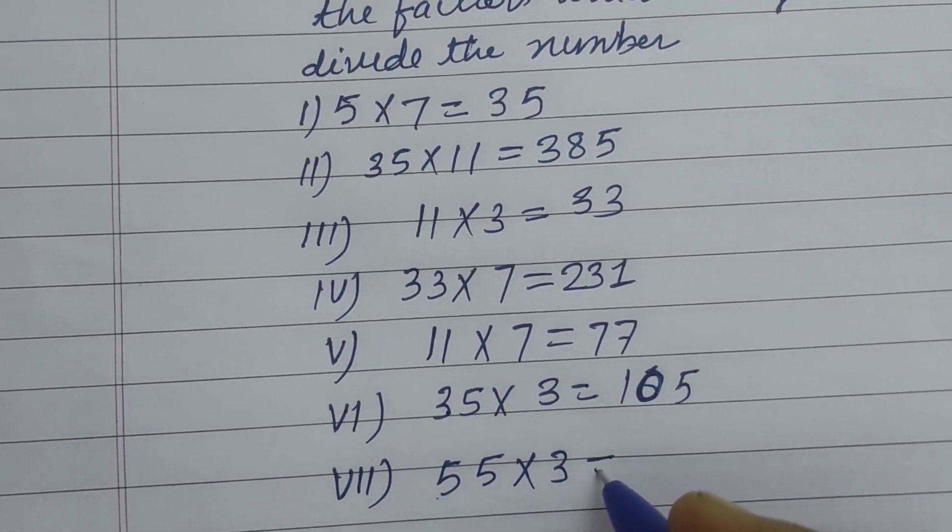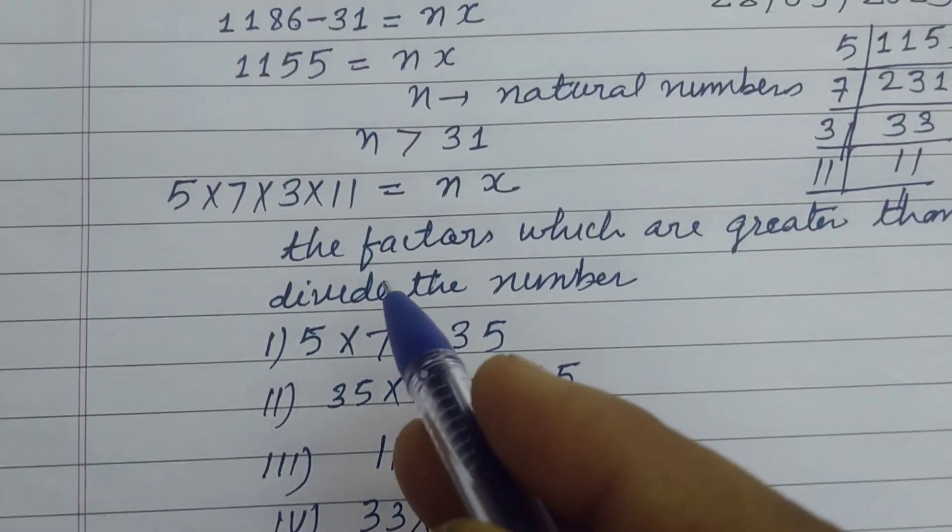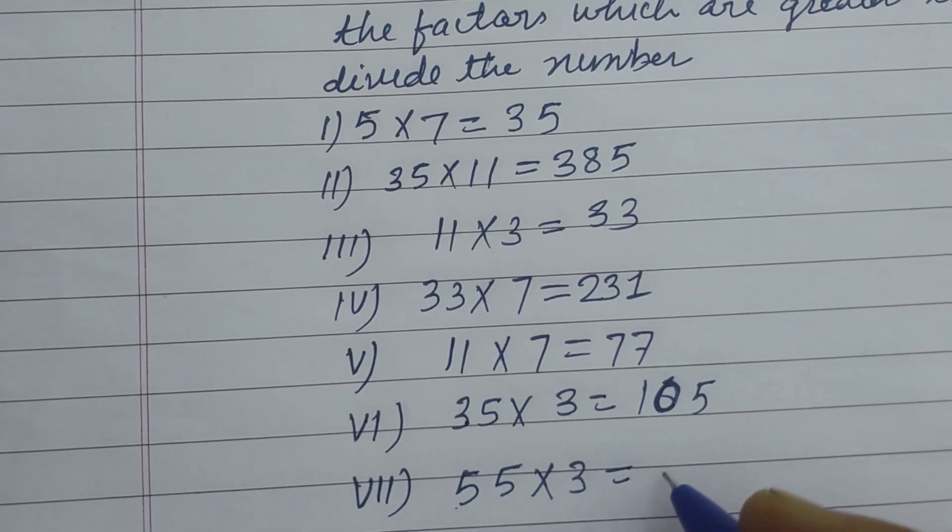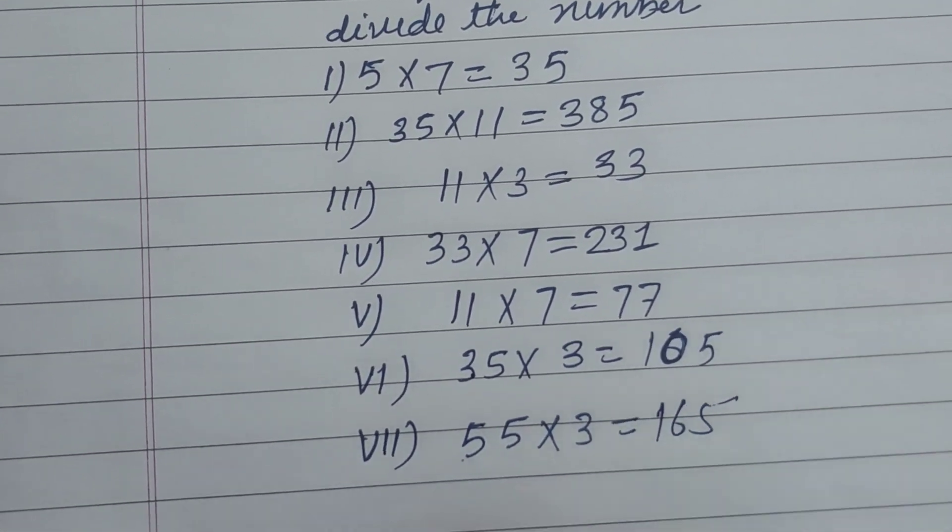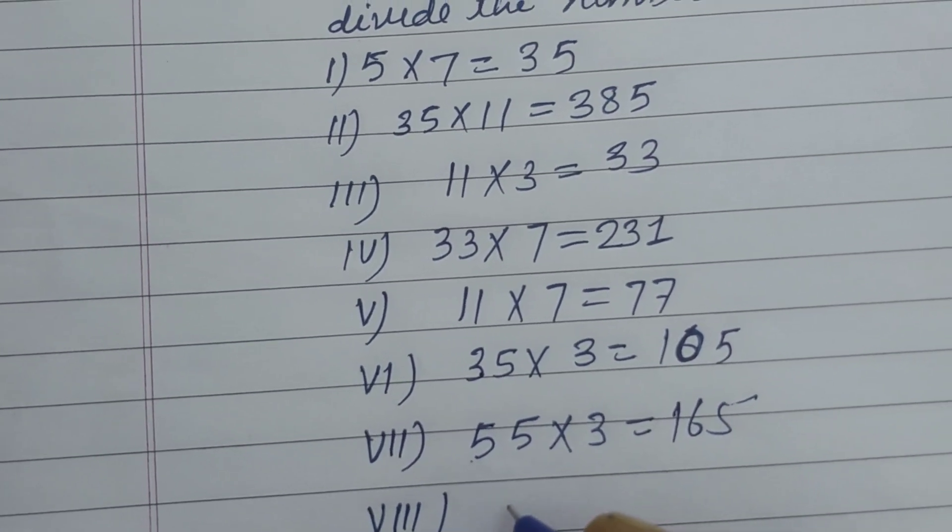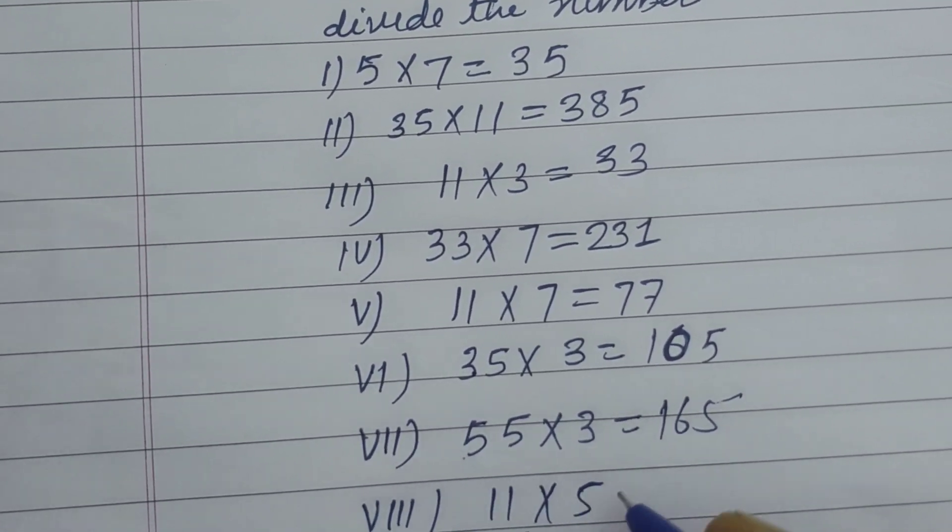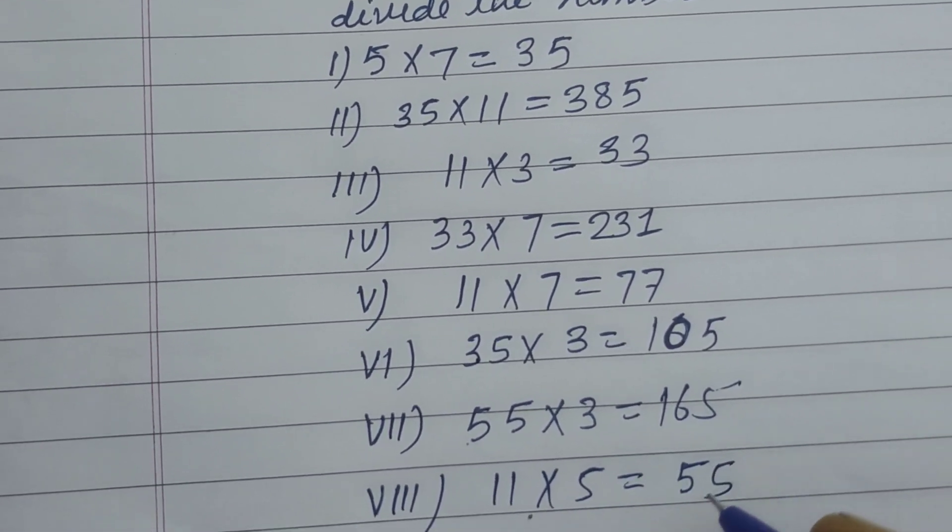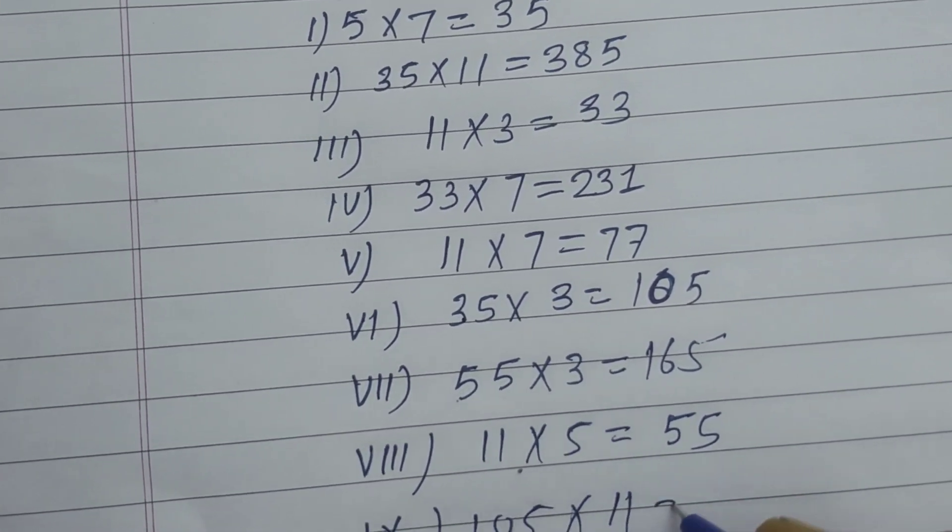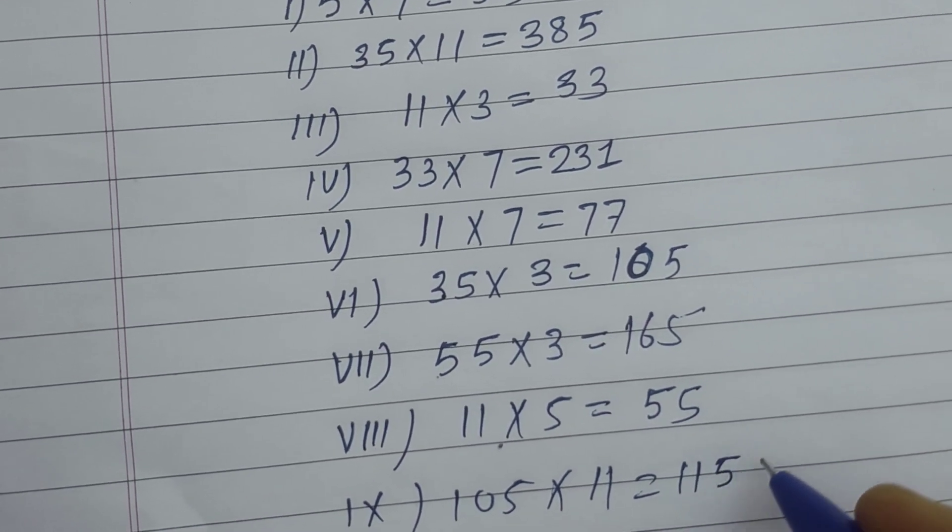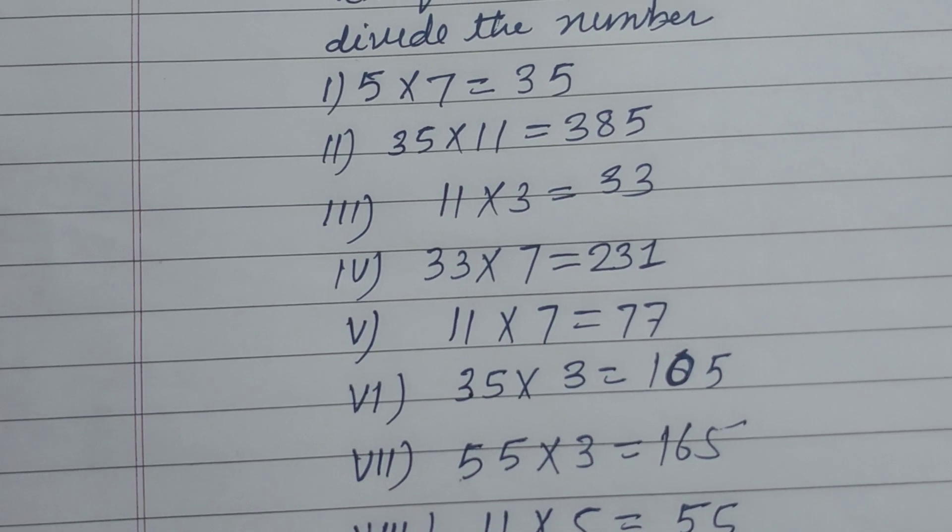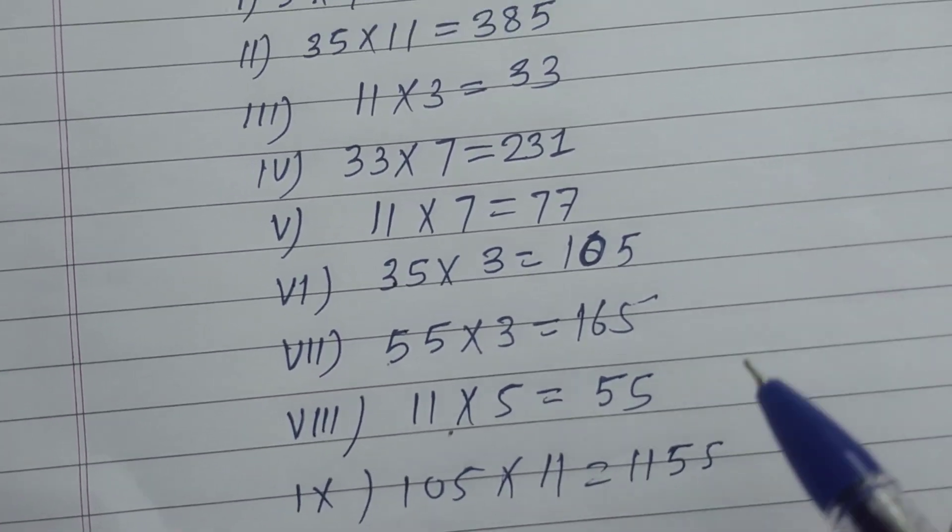Eighth is 11 × 5, this is 55. And ninth is 105 × 11, which is 1155. So these are the nine numbers.